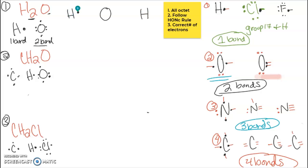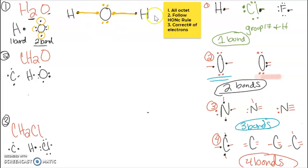Each hydrogen will have one electron to share. Oxygen will bond with two of its electrons — we'll share these two. We first make our shared bonds: one single bond between oxygen and one hydrogen, and another single bond between oxygen and the other hydrogen. We've used two of oxygen's electrons. Now we add our lone pairs — one lone pair and a second lone pair. Oxygen now has two, four, six, eight electrons, so it follows octet.